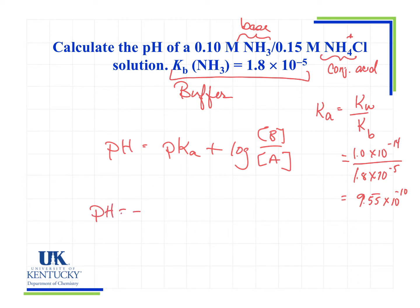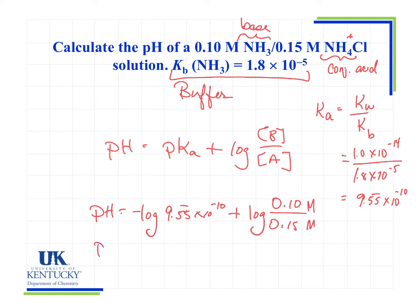pH equals pKa, which is the negative log of 9.55×10⁻¹⁰, plus the log of the concentrations. The base was the NH3 at 0.10, divided by 0.15. That gives a pH equal to 9.255, carrying a little extra sig figs along for the ride, plus a negative 0.176, giving a pH of 9.08.